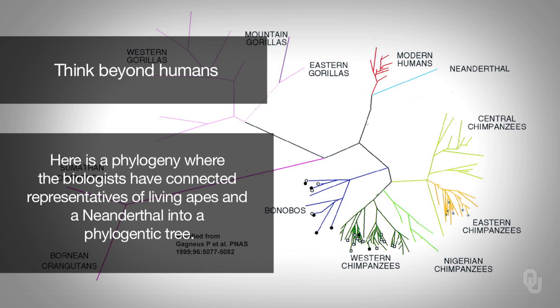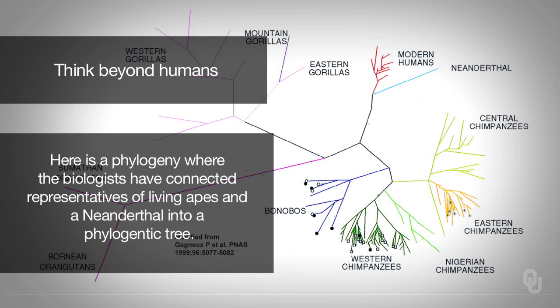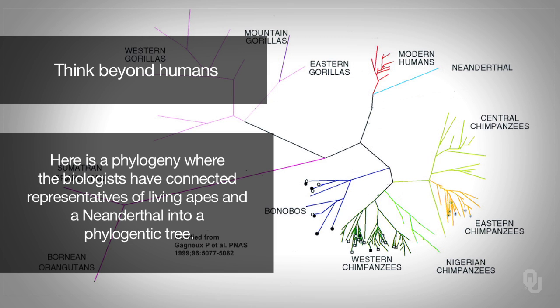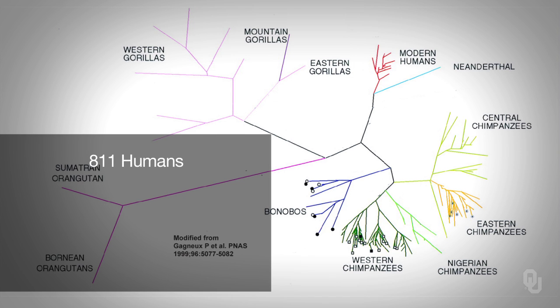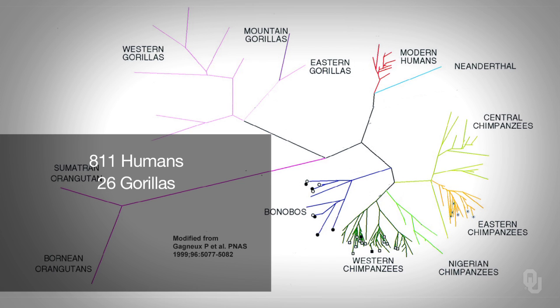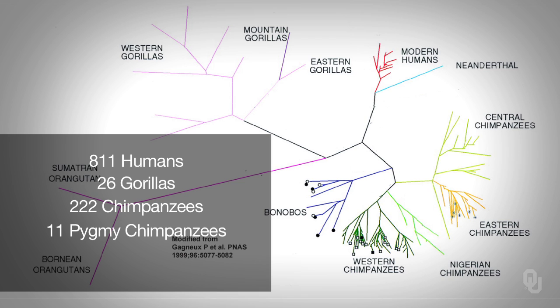We don't need to limit our study to just humans. Here is a phylogeny where the biologists have connected representatives of living apes and a Neanderthal into a phylogenetic tree. This tree also includes those 811 humans from all around the world, as well as 26 gorillas, 222 chimpanzees, 11 pygmy chimpanzees also known as bonobos, and 3 orangutans. The scientists have collapsed very similar branches into single branches to show the major mitochondrial lineages. This tree shows how apes are connected ancestrally and which apes share a more recent common ancestor to each other than to others.